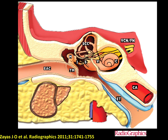In this cartoon illustrating the temporal bone structures, you see the external ear with the external auditory canal and tympanic membrane. Then you have the middle ear cavity, which is attached to the eustachian tube and is bordered superiorly by the tegmen tympani — this will become important later on. Inside the middle ear cavity you have the ossicles. And then here you have the otic capsule, which is the bone surrounding the inner ear structures, including the cochlea, vestibule, and semicircular canals.